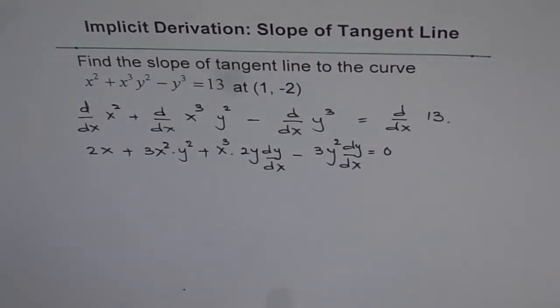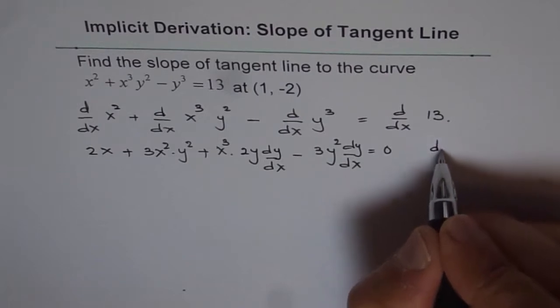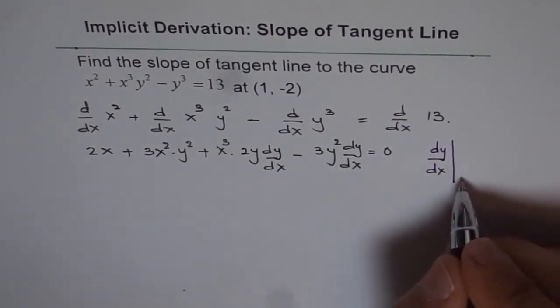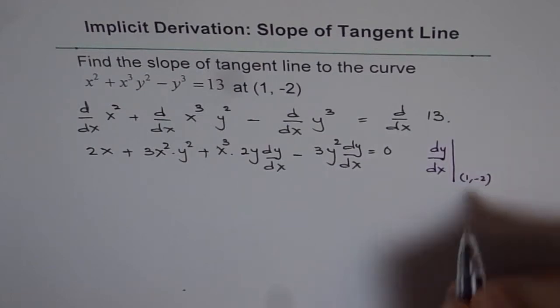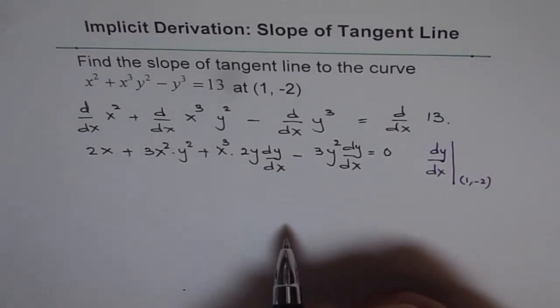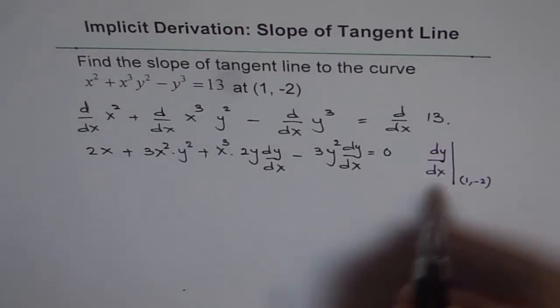Now as I said, we know that the point given to us is (1, -2). So we want to find the derivative. So we really want to find dy/dx at the point (1, -2). So we will substitute 1 for x and -2 for y and find dy/dx. So that is what we will do.